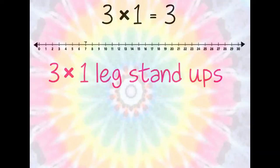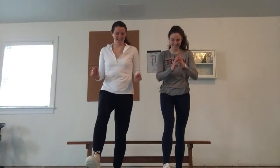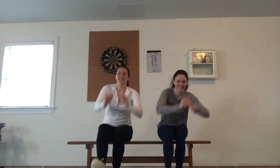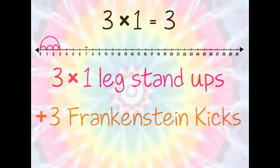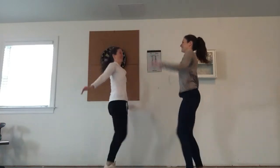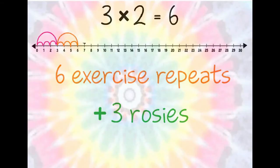To begin, we will complete 3 one-leg stand-ups. Ready? 3 times 1 is 3. We have completed 3 exercise repeats. Now we will add 3 Frankenstein Kicks. 3 times 2 is 6.